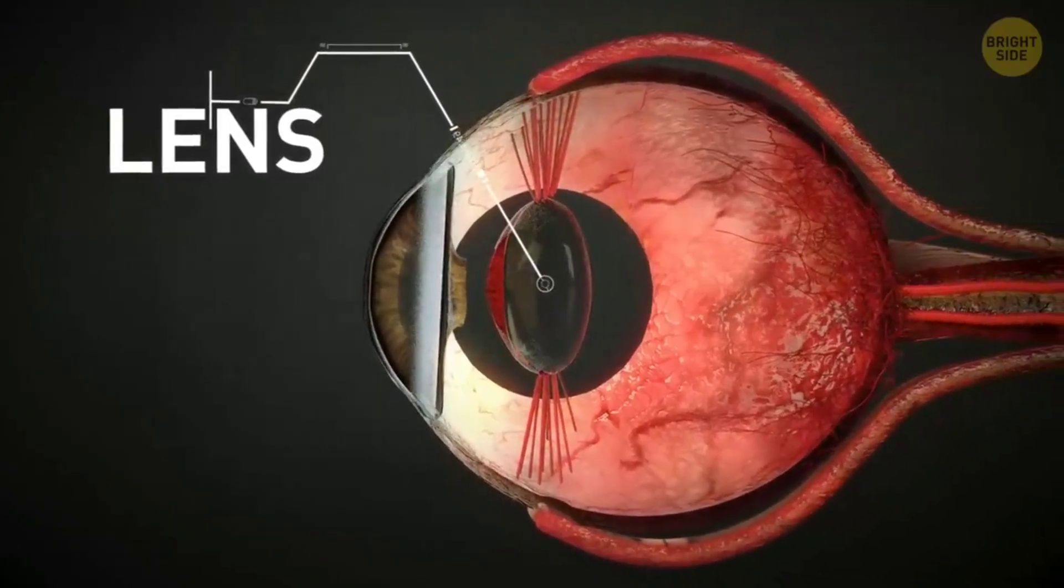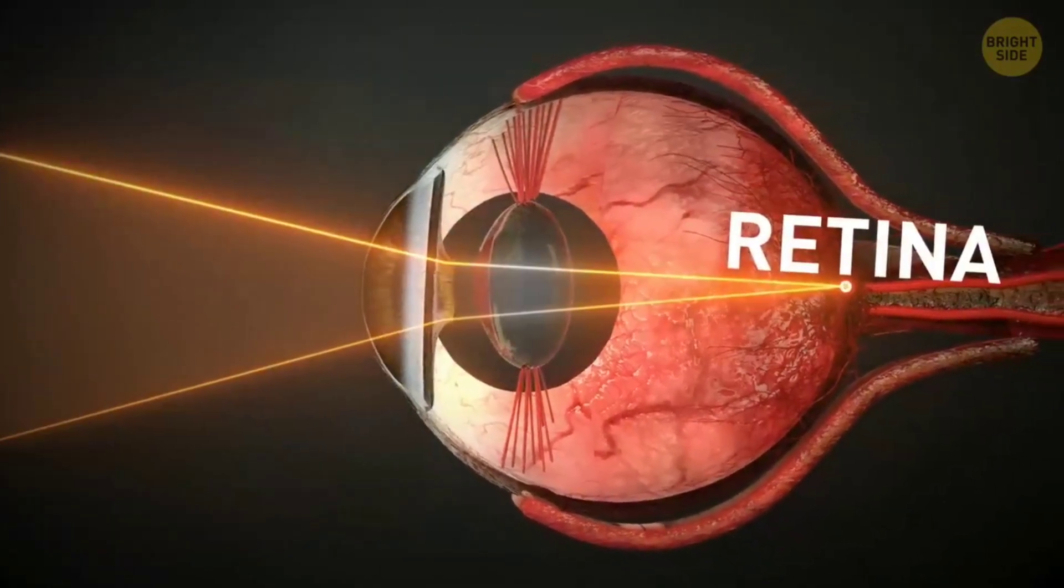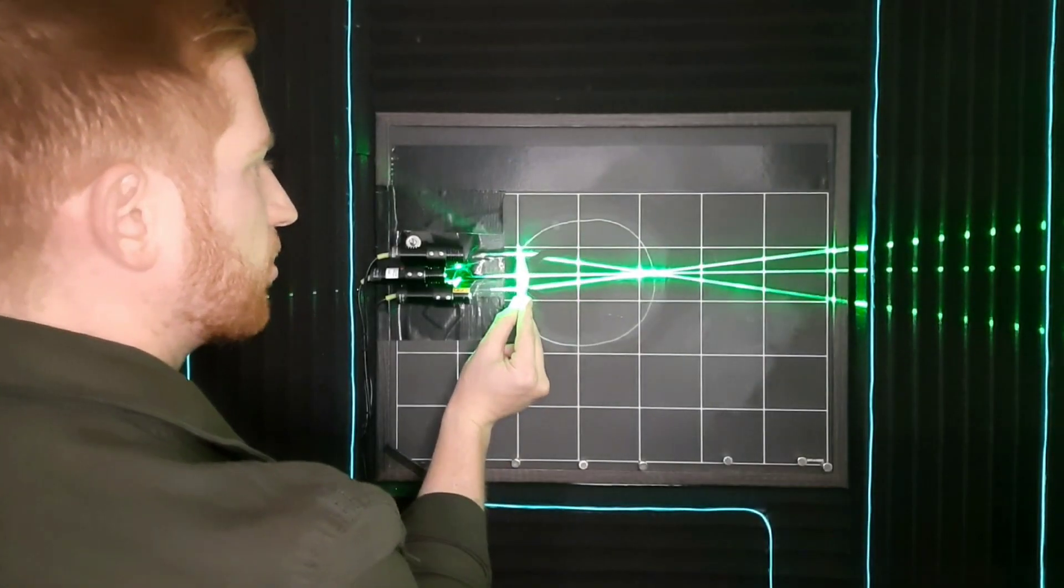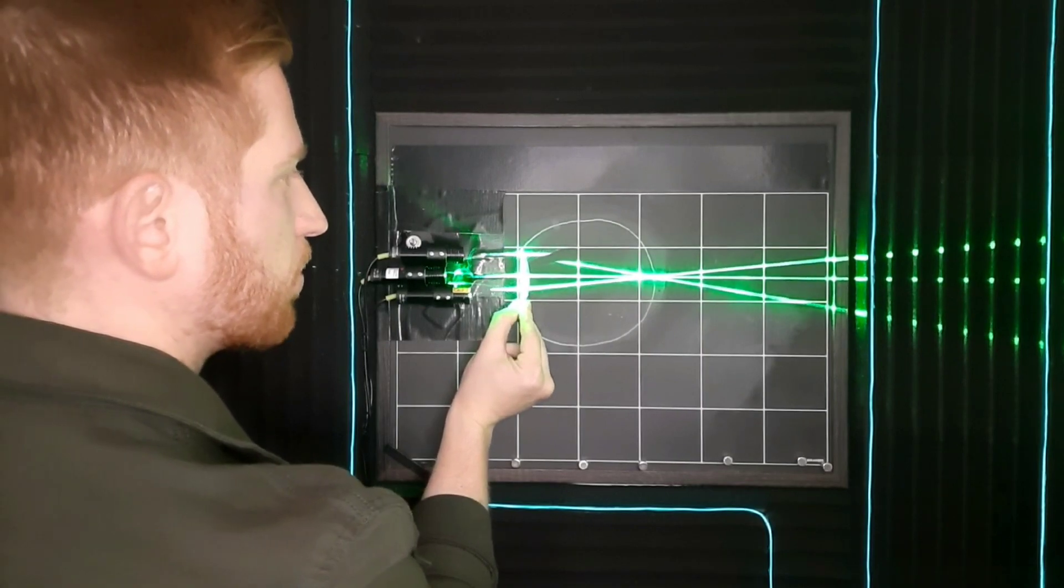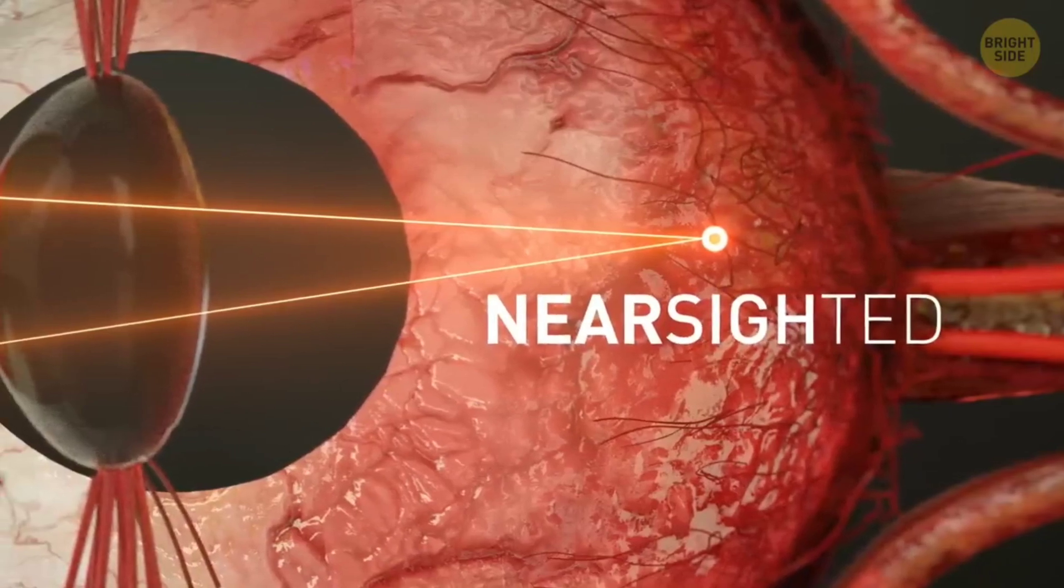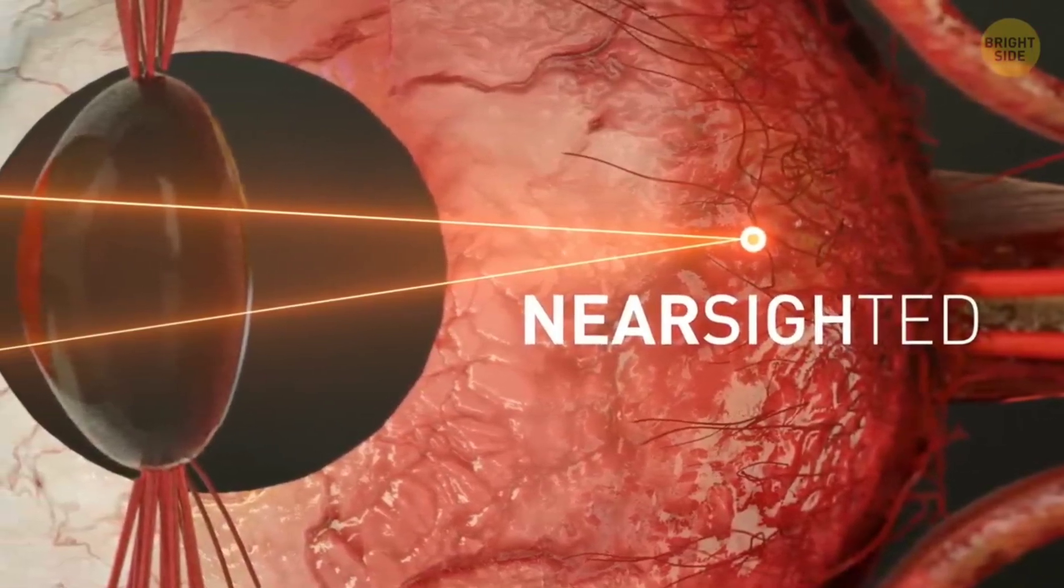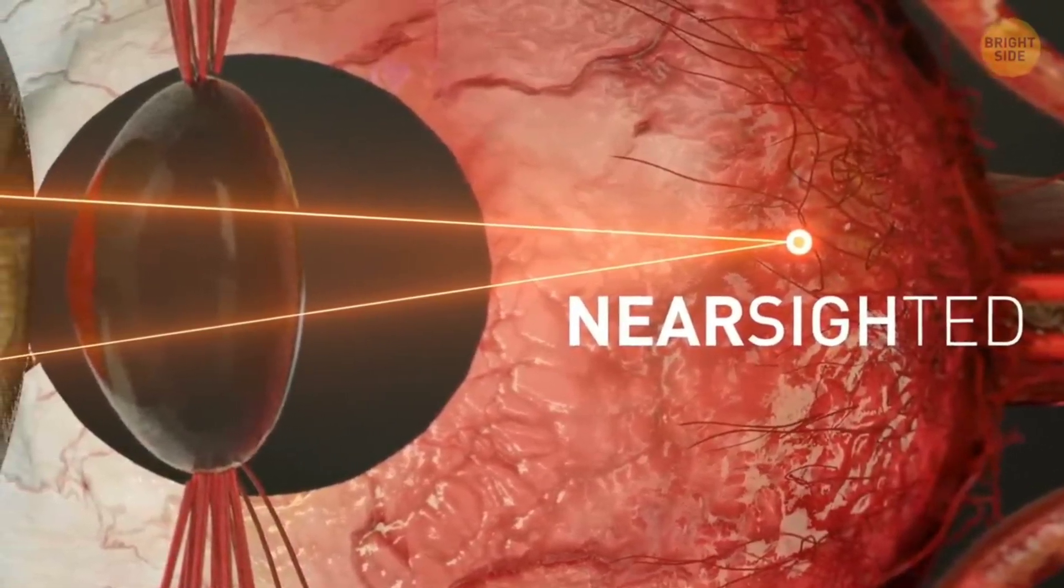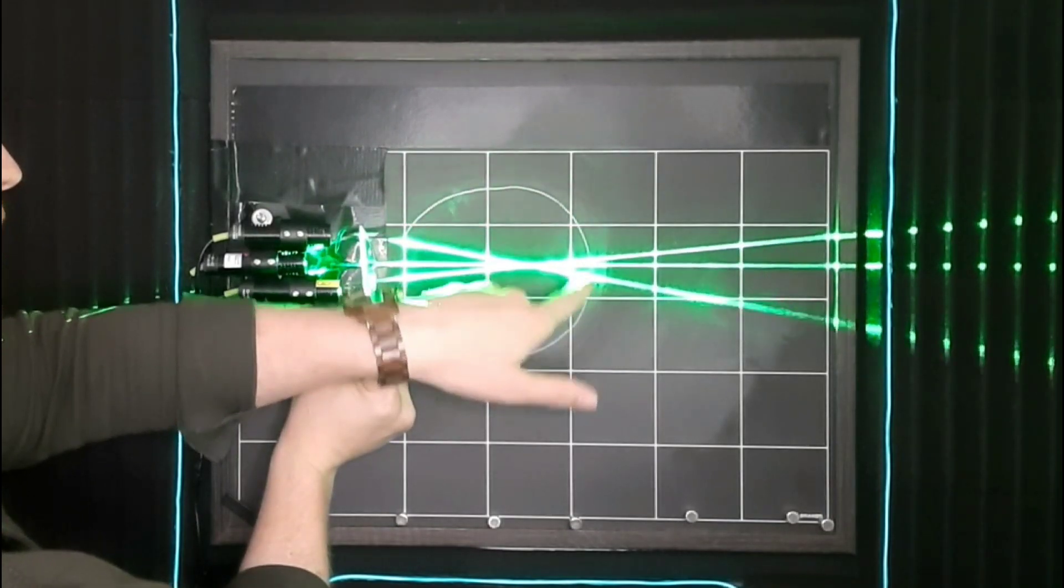It takes in that light from very far away and focuses that light down onto the retina. So let's say this is how the lens of your eye is supposed to work, forming a nice sharp image. You could be nearsighted, meaning that it forms the image sooner than it should, so by the time that light reaches your retina it is spread out into this little bit of a blur.